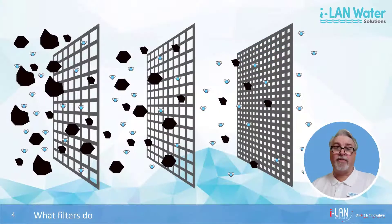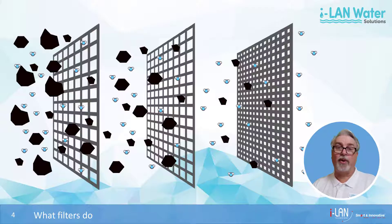One advantage we have when it comes to filtering water is that water molecules are very small, made up of just three atoms — two hydrogen and one oxygen — which is smaller than viruses and much smaller than bacteria and most contaminants. Because of that, we can send the water through screens, which will cause the larger particles and most microorganisms to get trapped and left behind.